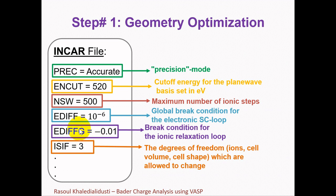ISIF determines which degrees of freedom — for example ions, cell volume, or cell shape — are allowed to change. ISIF=3 means all the ions, cell volume, and cell shapes should be changed to reach the optimized geometry. It depends on what you are seeking, and please refer to the VASP manual to make the right choice for your system.